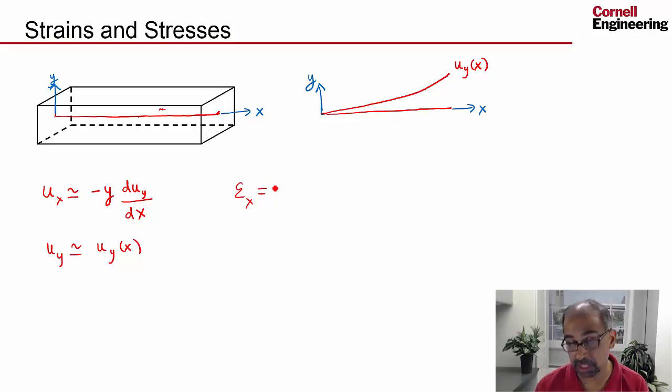That's given by du_x by dx, and if I substitute that in here I will get minus y d squared u_y by dx squared. So the strain is proportional to the second derivative of the equation of that line.